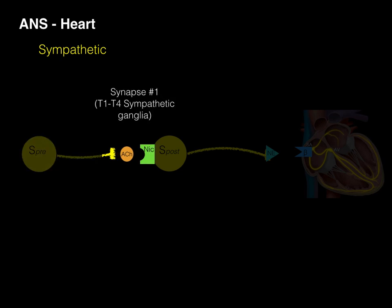Synapse number one occurs in the T1 to T4 sympathetic ganglia within the sympathetic chain, and that synapse between a pre-ganglionic and a post-ganglionic neuron occurs.